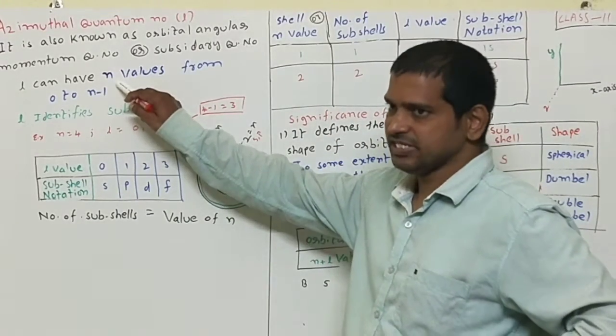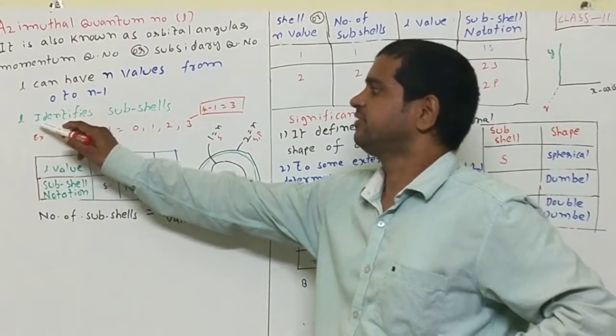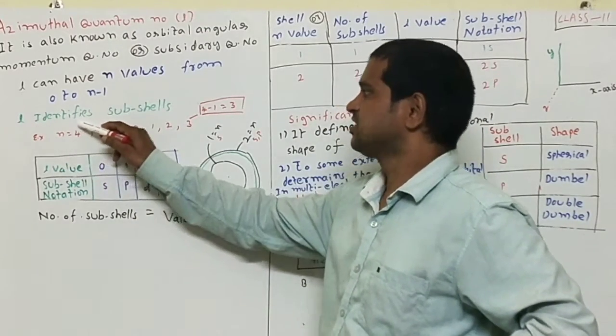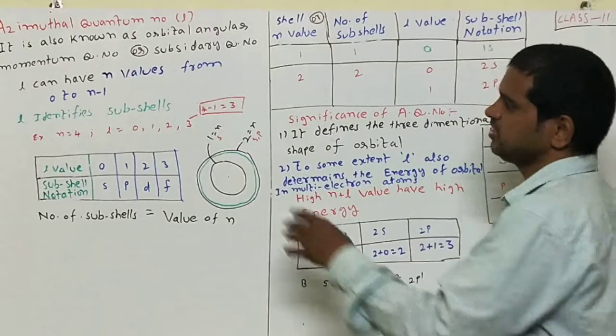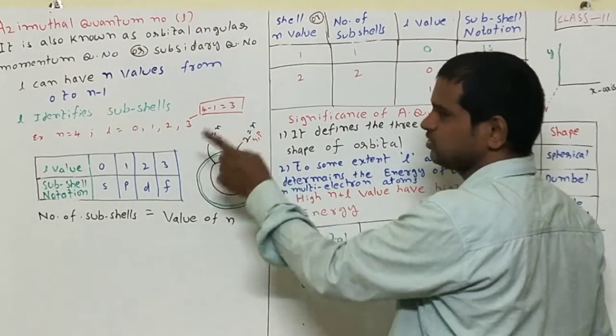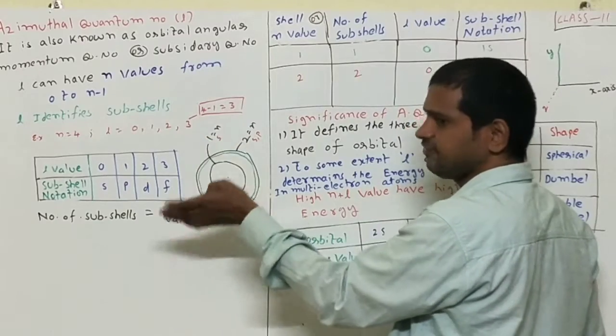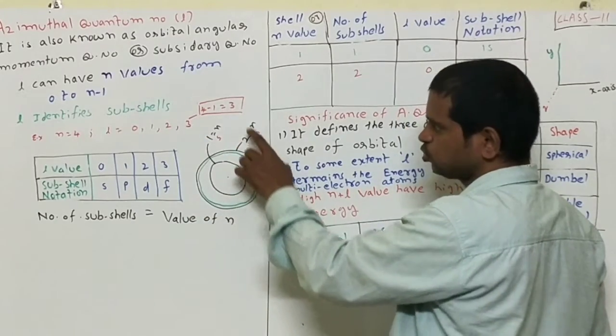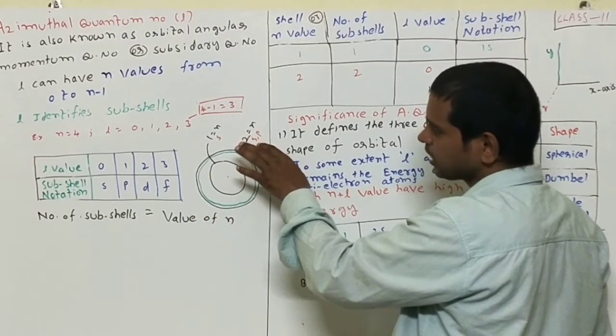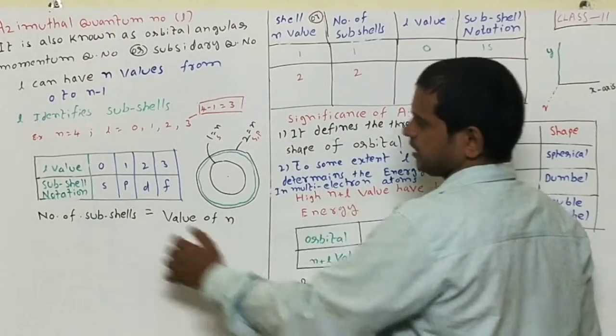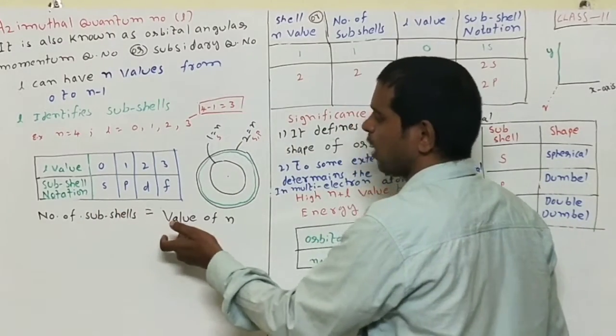n identifies shell, and in the same way, L identifies subshell. If n equals 1, it has only one subshell, that is S. And if n equals 2, it has two subshells, those are S and P. Number of subshells equals value of n.